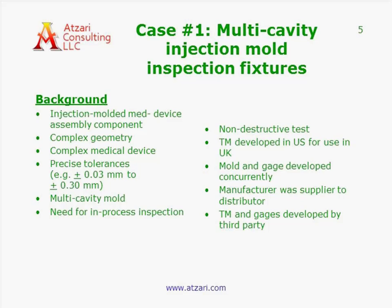Some of the challenges included working in different countries and with different companies. The test method was developed in the US for use in the UK. The development of the injection mold and the gauging system had to happen concurrently, both for schedule reasons and because they are interdependent. The manufacturer was a supplier to the final distributor, with a co-owned design, and the test method and gauges were developed by a third party.